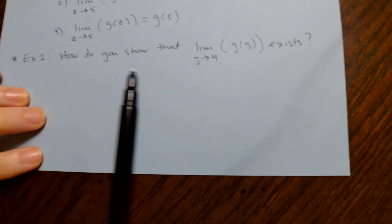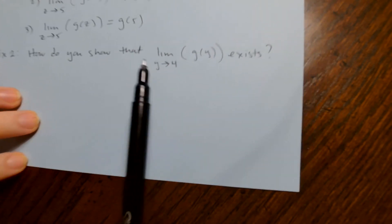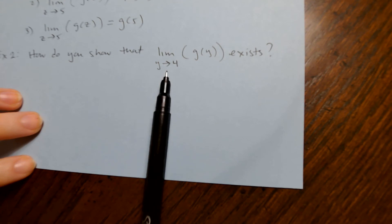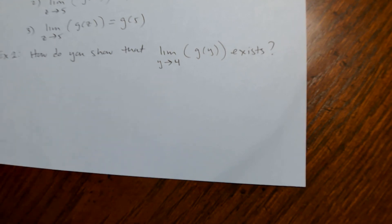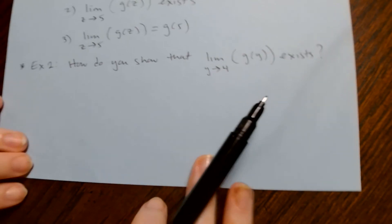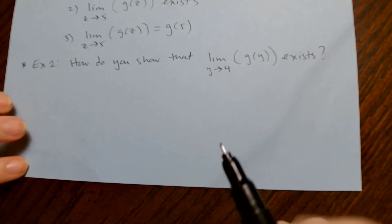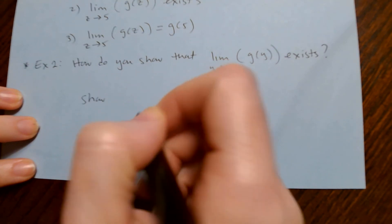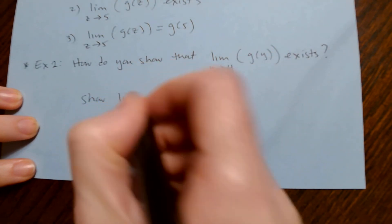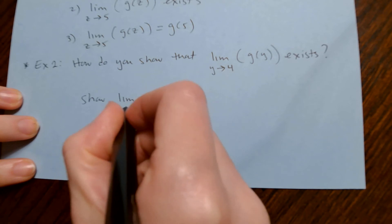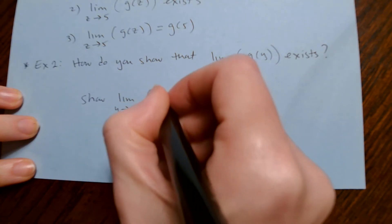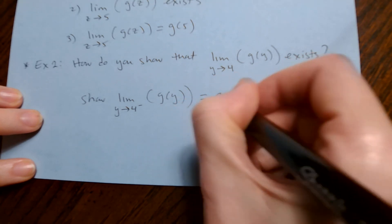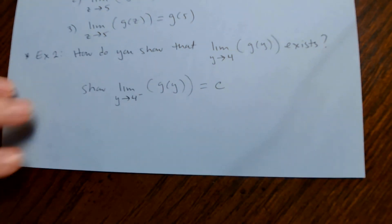How do you show that the limit as y approaches 4 of g(y) exists? You show that the limit as y approaches 4 from the left of g(y) equals some number c.